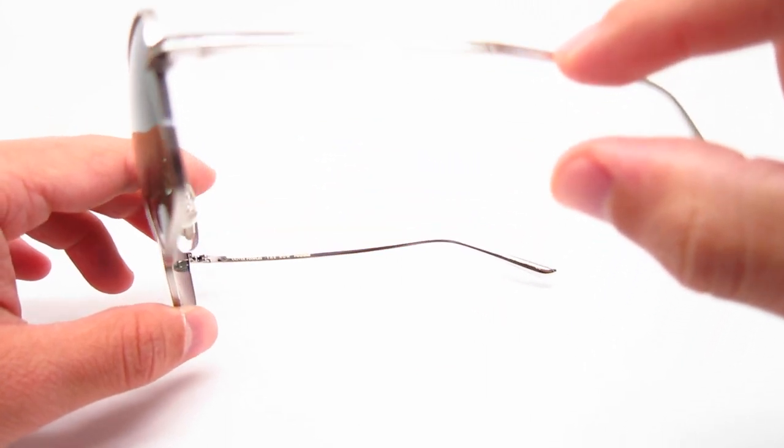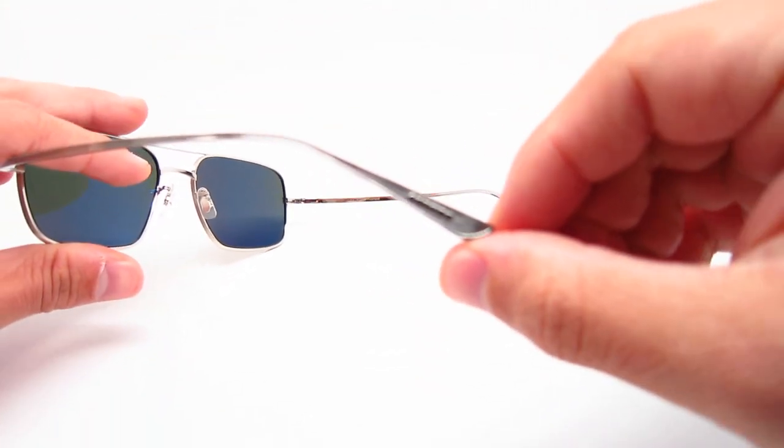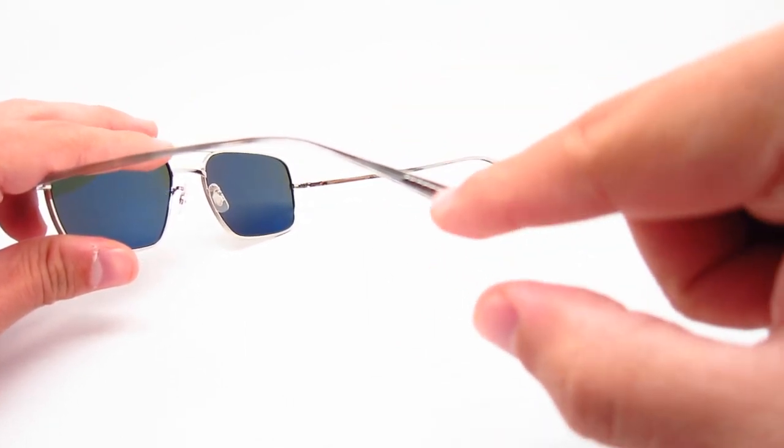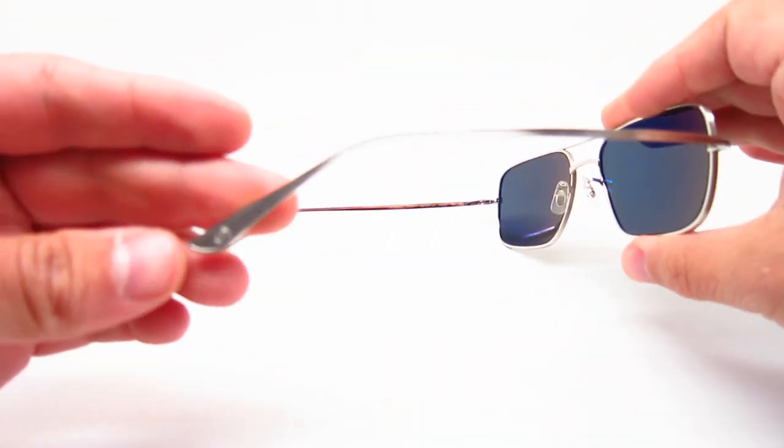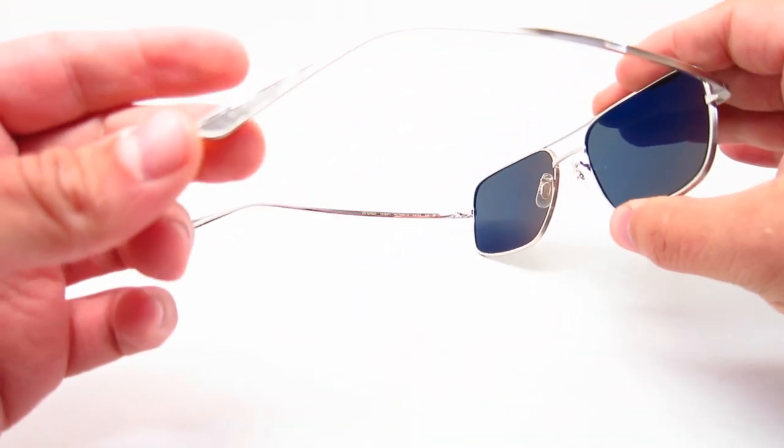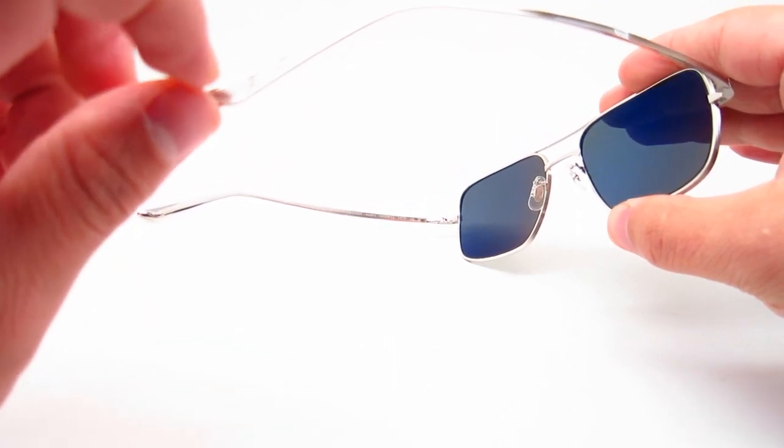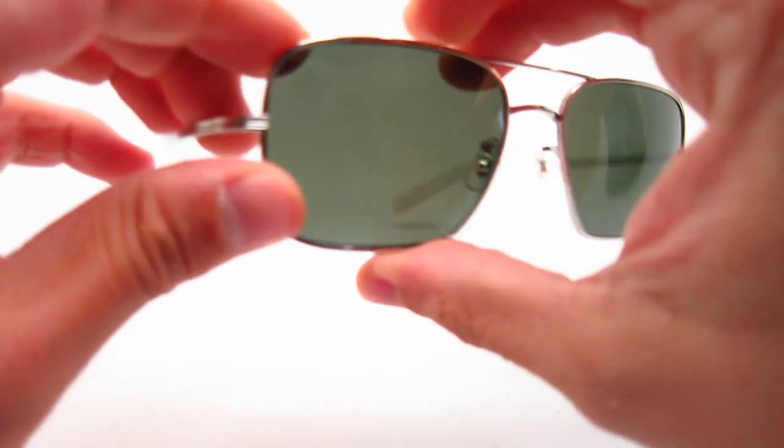It does have a nice pattern on the sides, on the back of it. It has the Oliver Peoples logo on one side, and on the other side, from what I can tell, I guess it's part of the roll collection. It's like a circle emblem with an R in the middle. So I assume that's the roll.